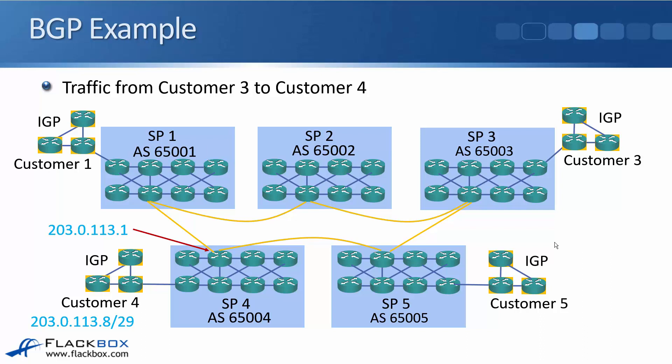Let's work through an example looking at how traffic gets from customer 3 in the top right down to the 203.0.113.8/29 network for customer 4 in the bottom left. The 203.0.113 range is designated for documentation use, so it's used here as public IP addresses for the examples.